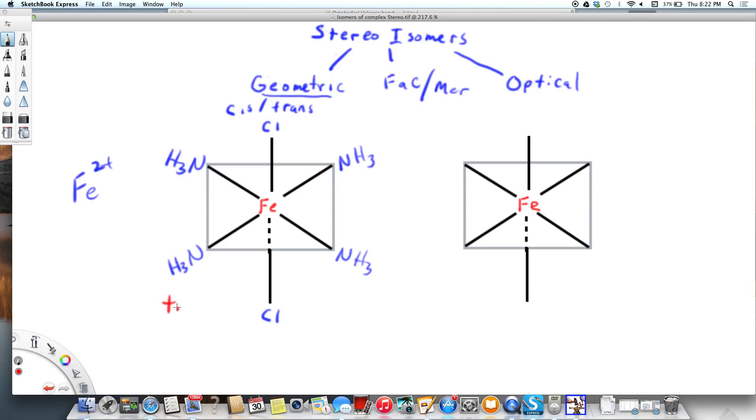If you said trans you would be correct. Let's draw the cis version. The cis version then could be, as long as they're the chlorides, we can put it on the bottom and we could put it on any of these. Any of them would work because they would be next to each other. The only one that would be across is if we put it on top.